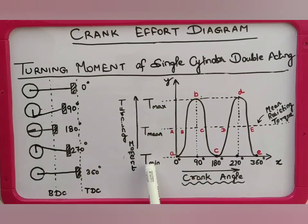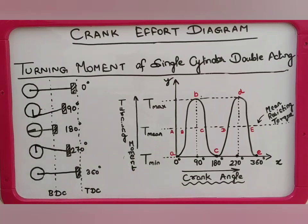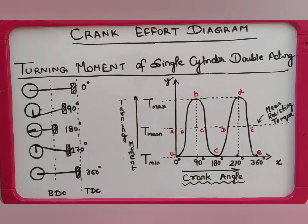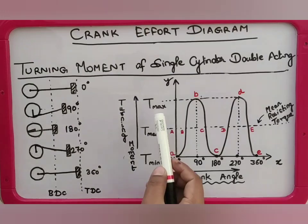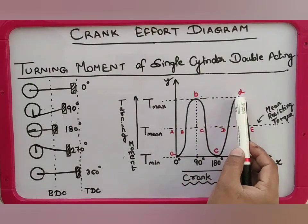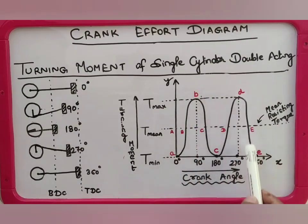T minimum is the minimum torque developed by the engine. T mean is the mean resisting torque, that is the average torque developed by the engine. T max is the maximum torque developed by the engine. Obviously, the maximum torque developed by the engine is at points B and D on curves ABC and CDE.